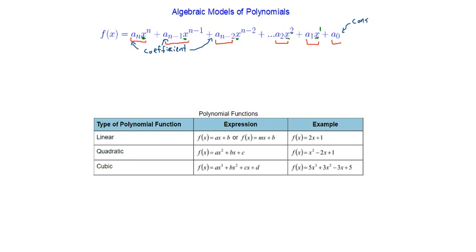The last term is called the constant term — it's the term that we're adding or subtracting at the end. Again, you could think of it as having an x to the exponent of zero, but you don't need to. That's the formal technical definition. Let's look at a couple of examples to see what that looks like.